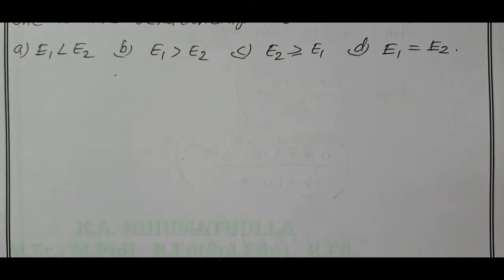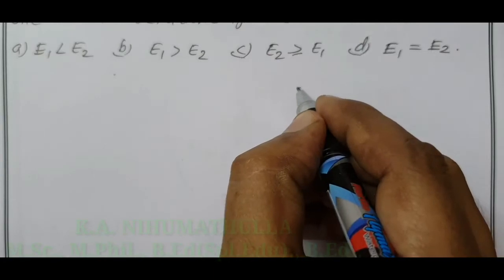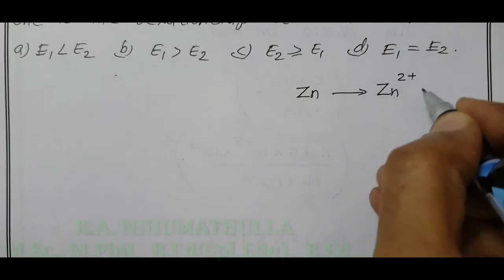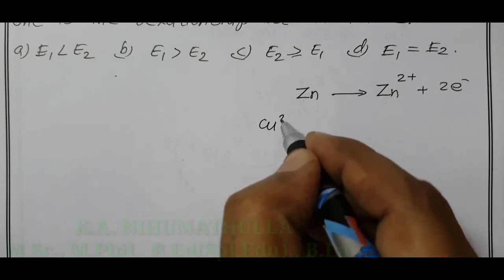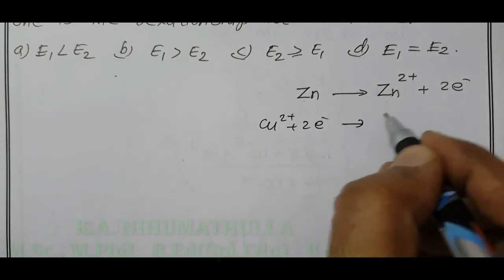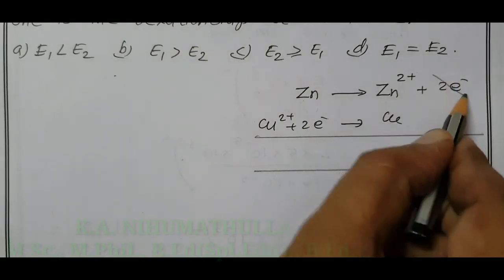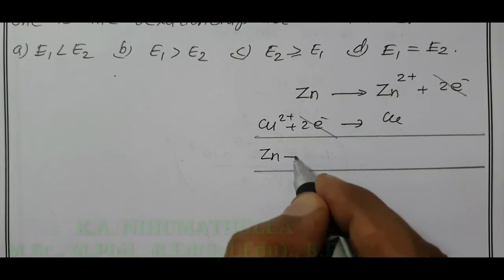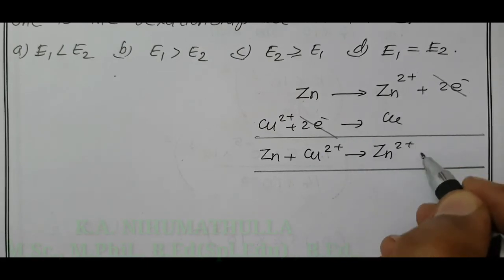We have to find out the relationship between E1 and E2. On the right-hand side, I write the equation. In the Daniel cell, zinc undergoes oxidation — loses electrons, becoming Zn²⁺ ion plus loss of 2 electrons. Copper 2+ ion gains 2 electrons and becomes metallic copper. When we add these two half-reactions, the 2 electrons get cancelled, and the final equation is: Zn + Cu²⁺ → Zn²⁺ + Cu.